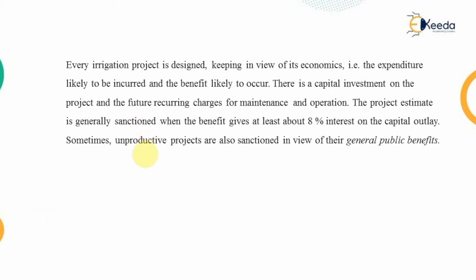Every irrigation project, and for that sake every civil engineering project, is designed keeping in view its economics. That means what is the cost-to-benefit ratio of the design we are carrying out. We will list out the expenditure likely to be incurred and look at the benefits likely to occur. The capital investment on any project and future charges for maintenance and ongoing operation are both included in the project estimate.